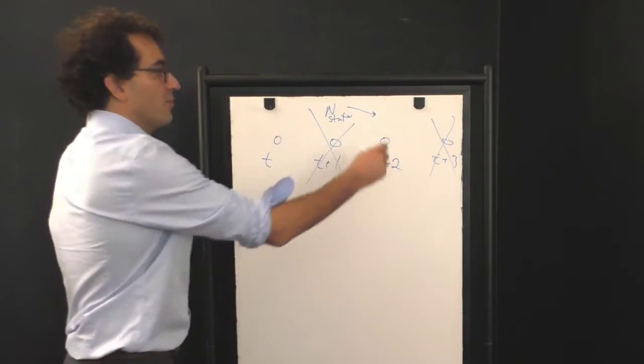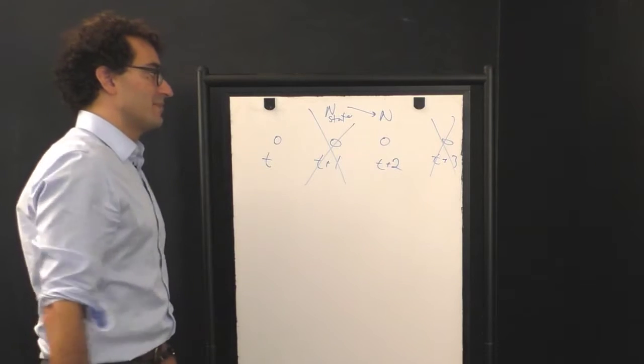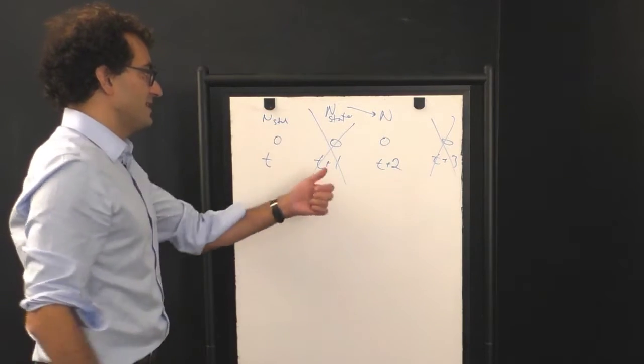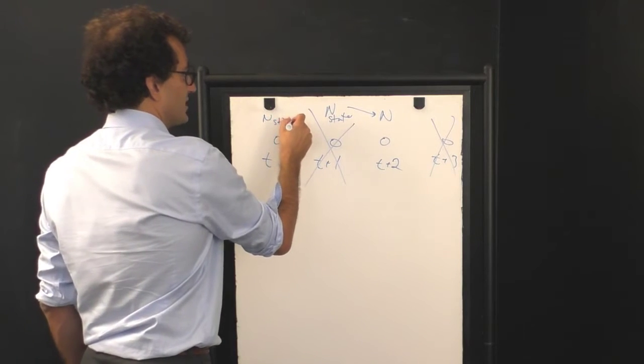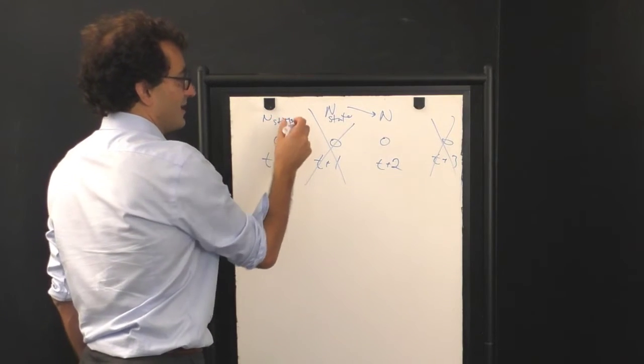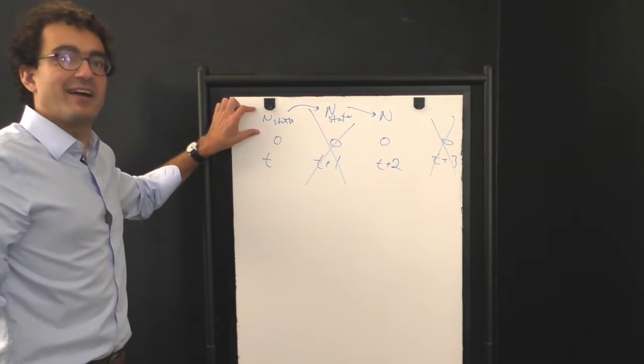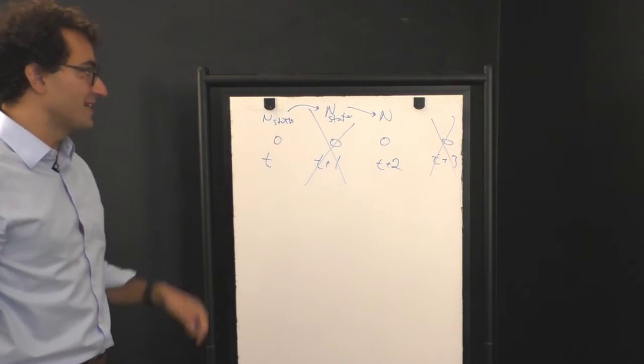Similarly, to go from time t to t plus one, you just had to know which state you were in at time t. It's a Markov chain, and so what that means is that you have a finite and fixed number of states over time.